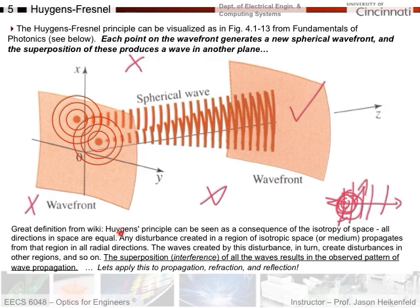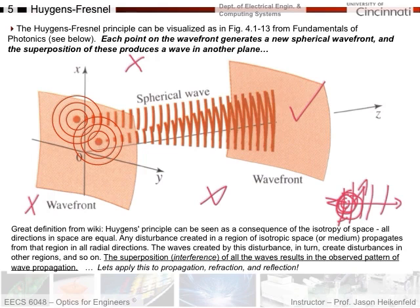Here's a definition from Wikipedia: the Huygens Principle can be seen as a consequence of the isotropy of space — all directions in space are equal, meaning this thing can radiate in any direction at any time. Any disturbance created in a region of isotropic space propagates from that region in all radial directions. The superposition and interference of these waves results in an observed pattern of wave propagation. This explains why wave energy keeps moving forward rather than dissipating in all directions.